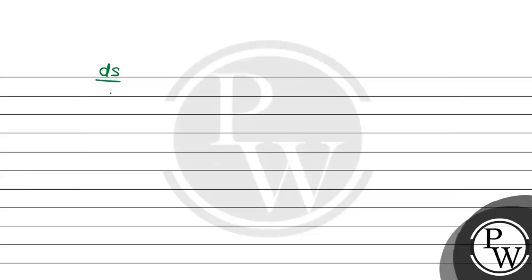Substituting the value: 5 = 2 · dS/dt, so dS/dt = 5/2 = 2.5 km per hour. This is the required solution.